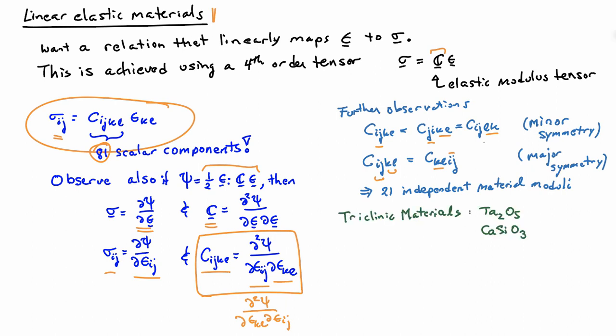They are called triclinic materials. Just some examples: tantalum oxide and calcium isosilicate are two examples of triclinic materials. There are a lot of different mineral-type materials that have the triclinic behavior. They don't come up very often in engineering, but they certainly do exist.